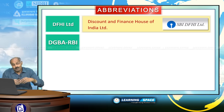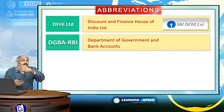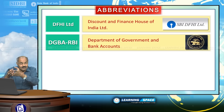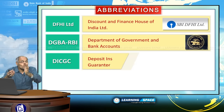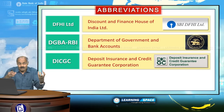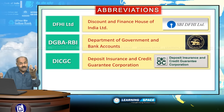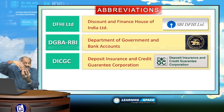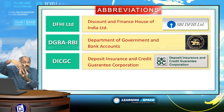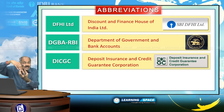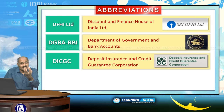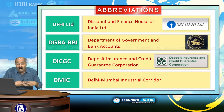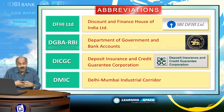DGBA RBI is the Department of Government and Bank Accounts — one department under the Reserve Bank of India. DICGC is the Deposit Insurance and Credit Guarantee Corporation. If a bank goes into liquidation, DICGC guarantees you a maximum payment of up to rupees one lakh. The premium for this insurance is paid by the respective banks. DMIC is the Delhi Mumbai Industrial Corridor, coming up in the western part of the country.